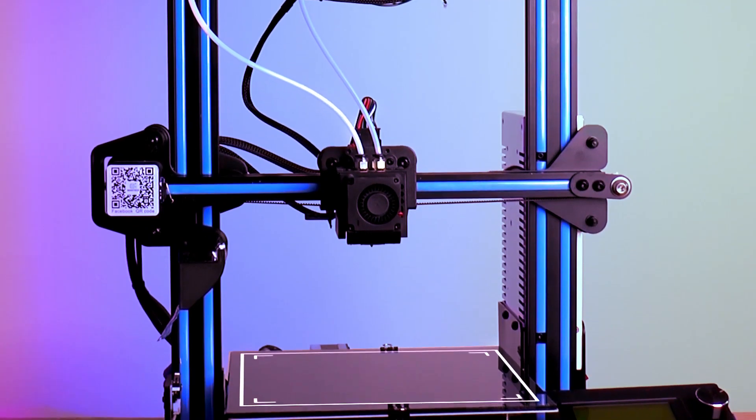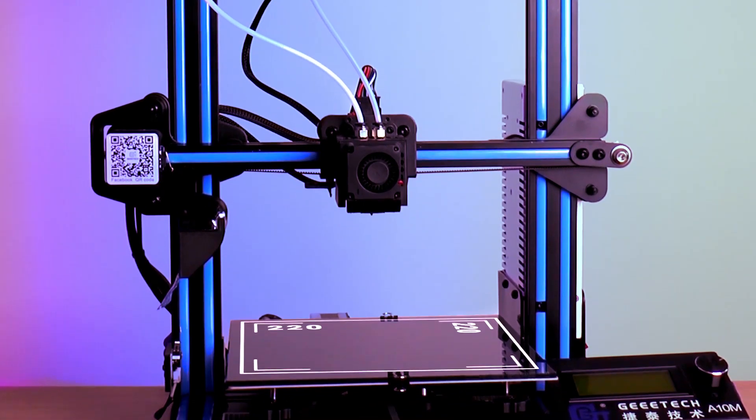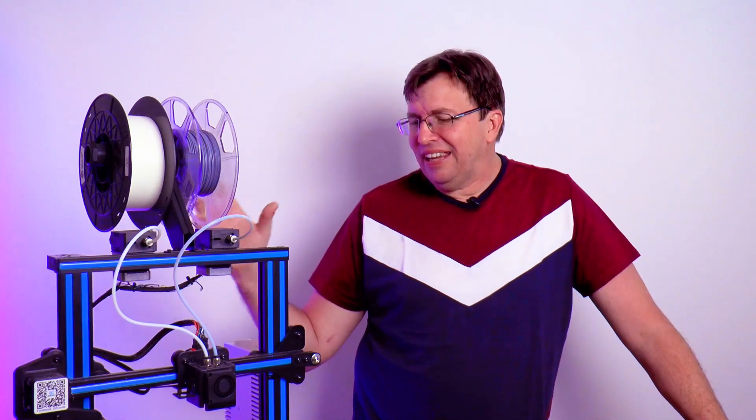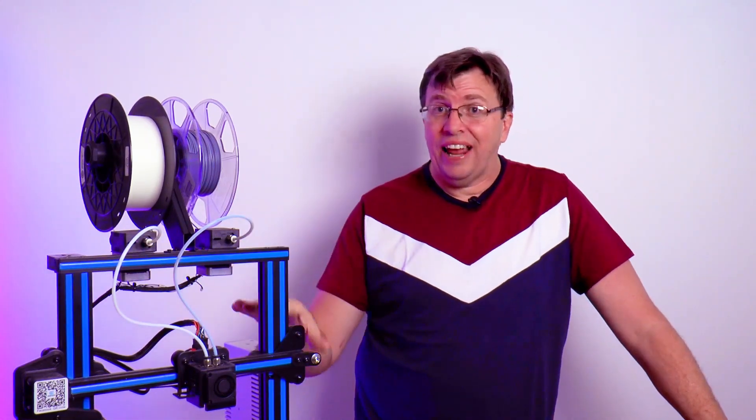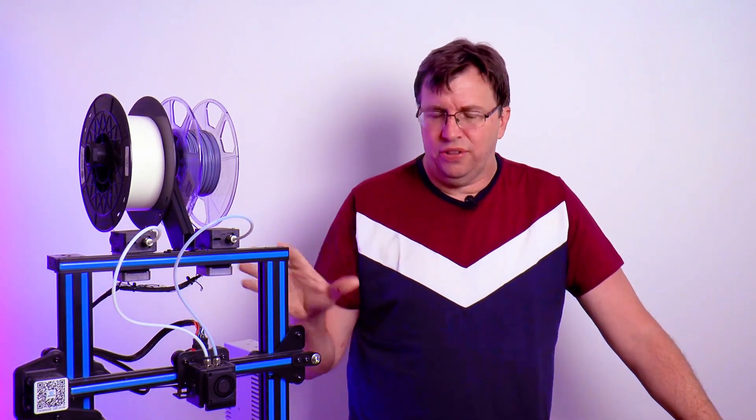The build plate on this 3D printer is 220x220x250, the same size as a Creality Ender 3 because it's based on the same printer.